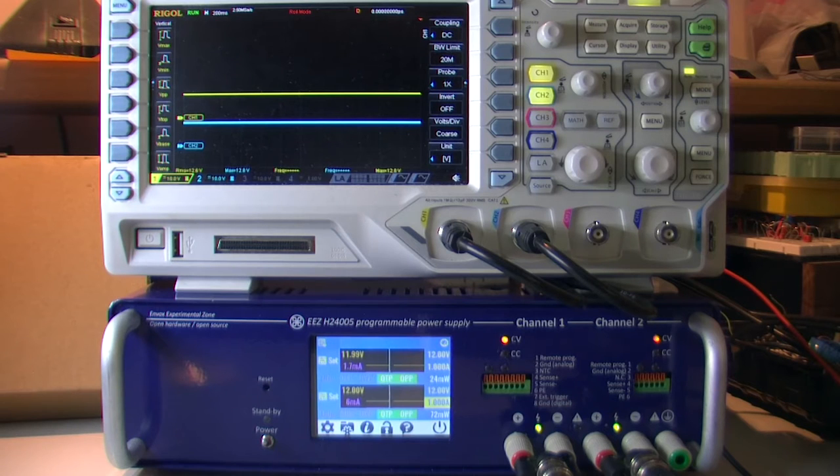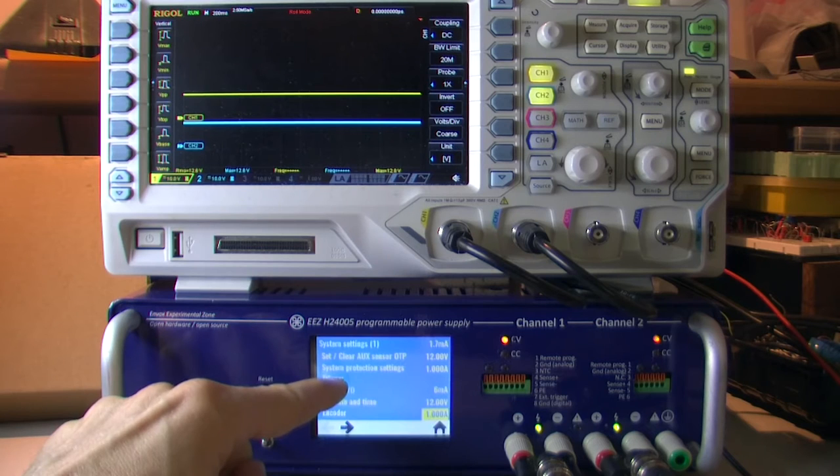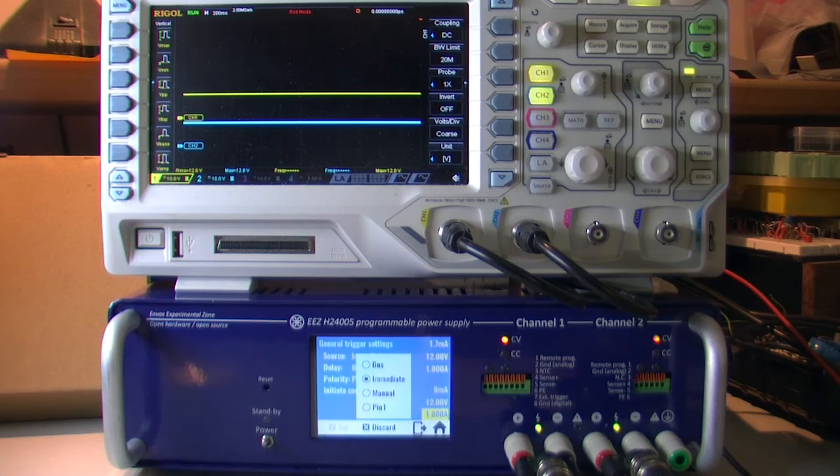We have four different types of trigger events. Those four triggering sources can be found under a new page in system settings trigger source, where we can see that we have bus, immediate, manual, and pin 1.